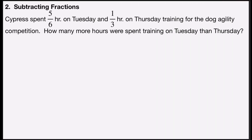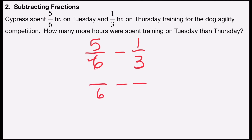Problem number two is subtracting fractions. It says Cypress spent five-sixths hours on Tuesday and one-third hour on Thursday training for the Dog Agility Competition. How many more hours were spent training on Tuesday than on Thursday? So I'm going to subtract five-sixths minus one-third. Since six is a multiple of three, I know my least common denominator is going to be six. If you have two numbers that are multiples of one another, you pick the higher multiple — that will always be your least common denominator.